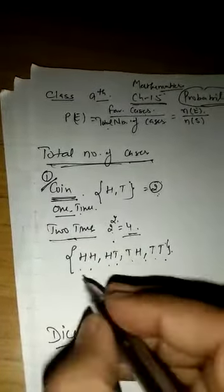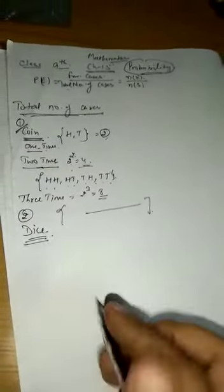Our second type is dice. A lot of questions are based on the dice. We are already very familiar with the dice. If a dice is tossed one time, there are six cases: one, two, three, four, five, six. There are six total outcomes.